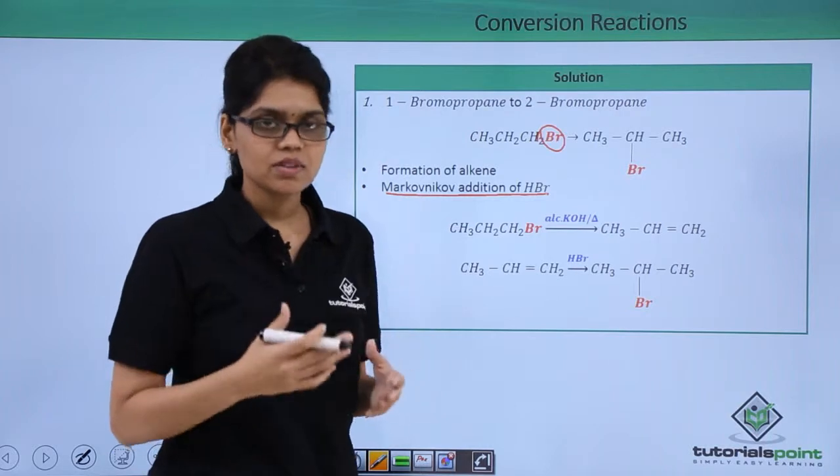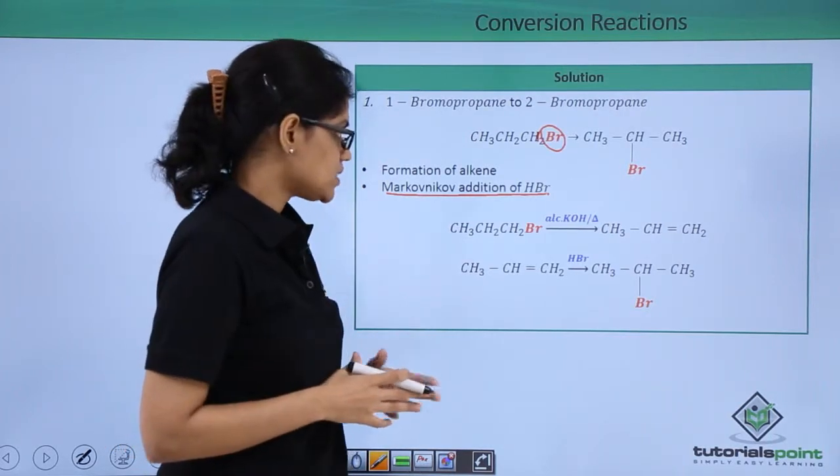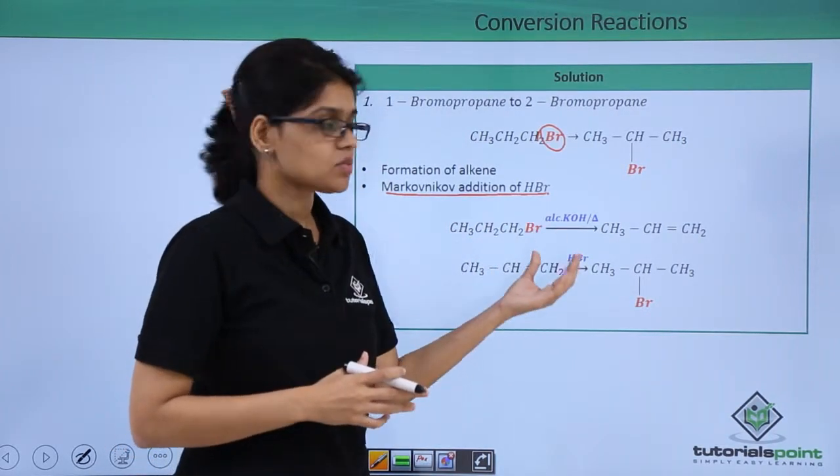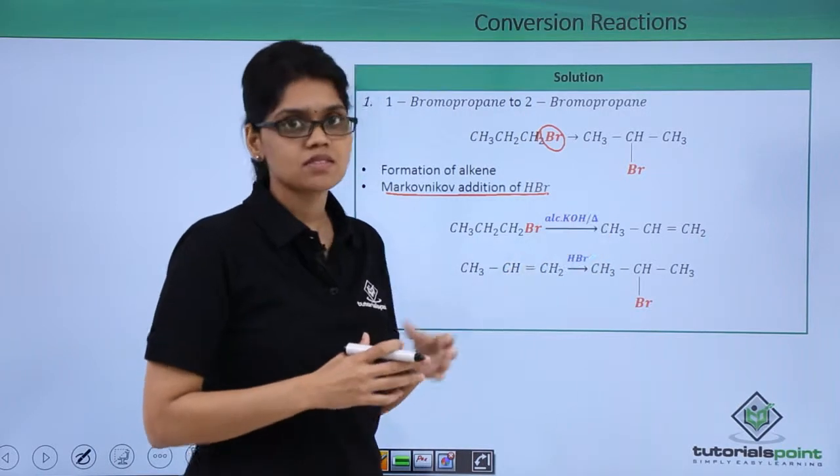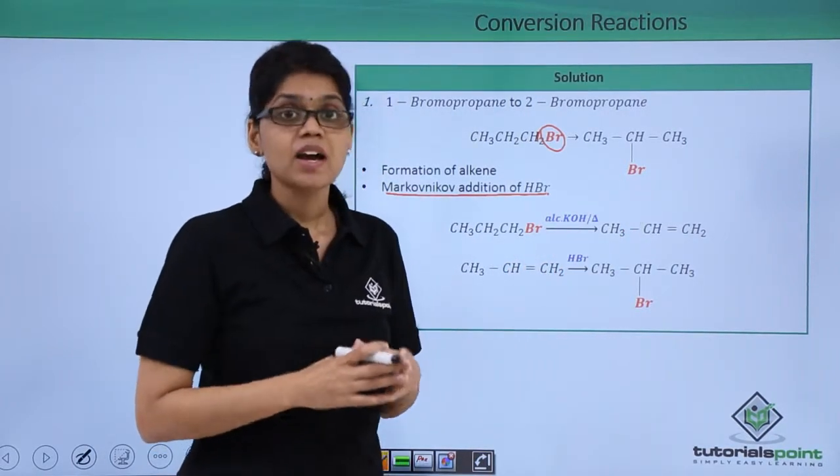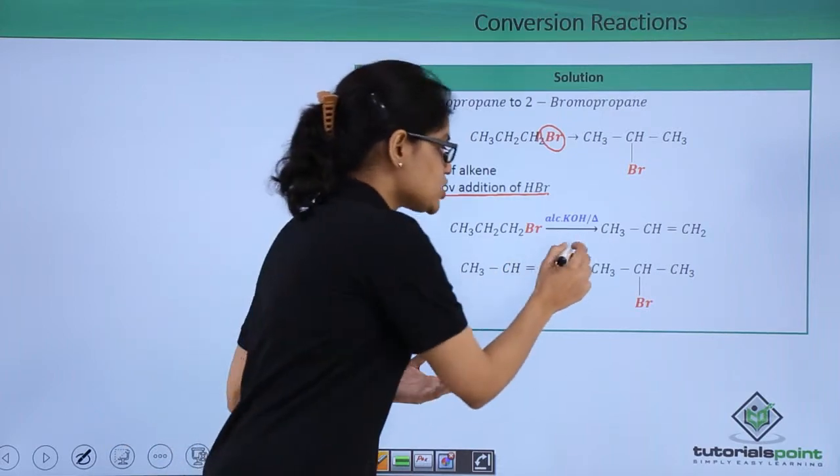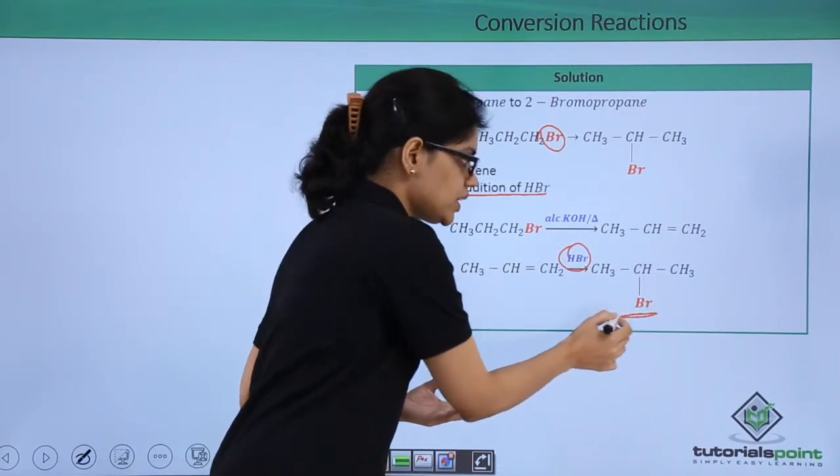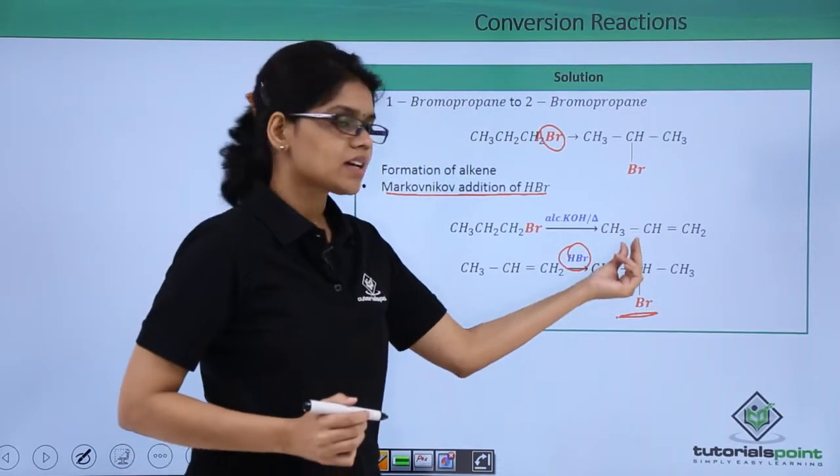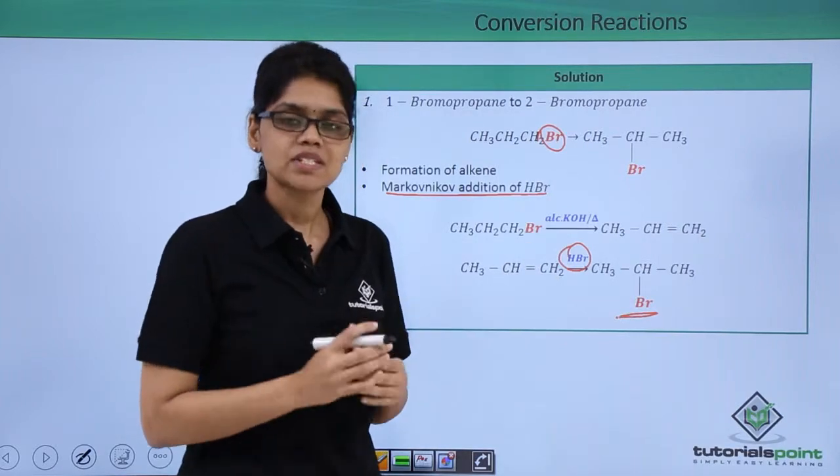Let us look at what reagents will help in this conversion. When this alkyl halide reacts with alcoholic KOH in the presence of heat you get propene as the final product. And when this alkene reacts with HBr you get the Markovnikov product where bromine has been attached to that particular carbon atom which has less number of hydrogen atoms.